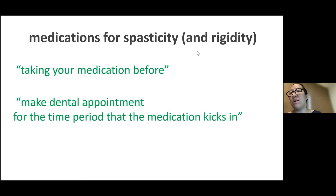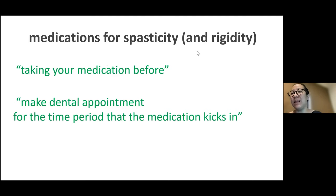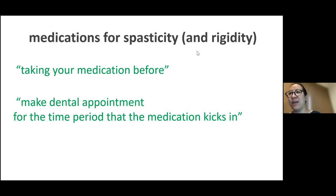For patients with stroke or Parkinson's, they will have medication to reduce spasticity and rigidity. Make sure the patient takes it before the appointment, and schedule the appointment when the medication has kicked in. Anti-spasticity medication takes about 10–20 minutes, but for Parkinson's rigidity and tremor, it takes about one and a half to two hours. So if the patient takes medication at 8am, book the appointment at 10am.